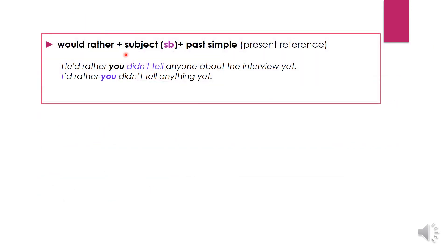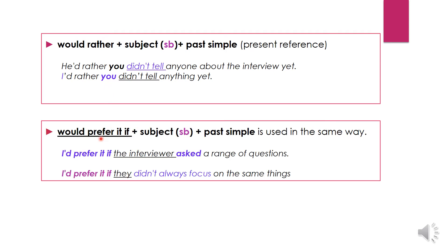'Would rather' can be followed by a subject and past simple to express a present reference. For example, 'I'd rather you didn't tell anyone about the interview yet.' Pay attention — you have a different subject in the second clause. 'Would prefer it if', followed by a subject and past simple, is used in the same way: 'I'd prefer it if the interviewer asked a range of questions' or 'I'd prefer it if they didn't always focus on the same things.'